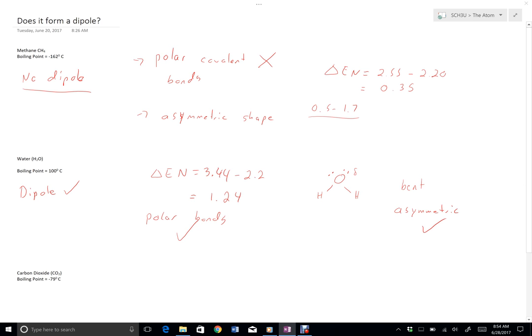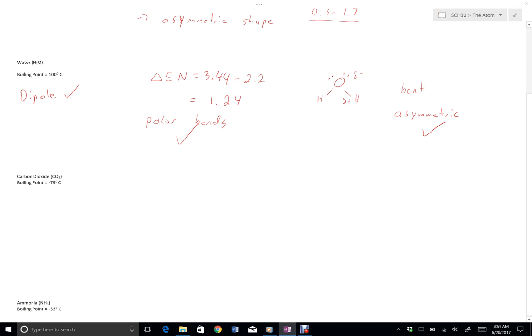So we have an asymmetric shape and polar bonds, and that's how I know I have a dipole. In this case, the oxygen is the partially negative part and the hydrogens are the partially positive part.